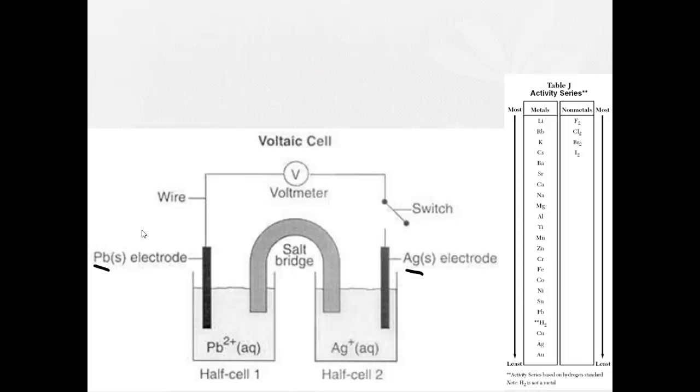So let's take a look at a voltaic cell. Here's a basic voltaic cell. We have two electrodes and two half cells. They're connected by a salt bridge. And what we're going to imagine is what happens when we close the switch.